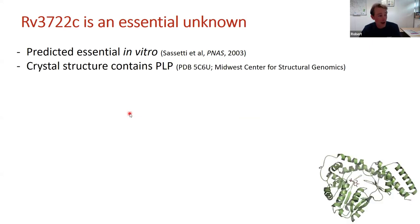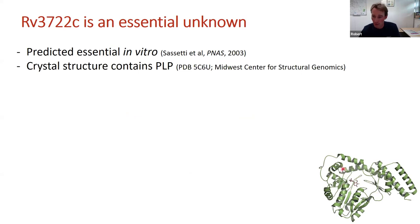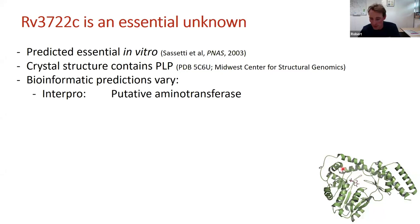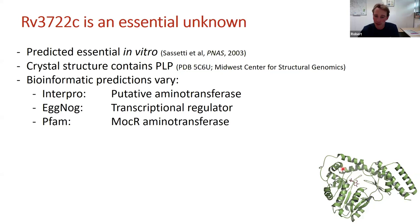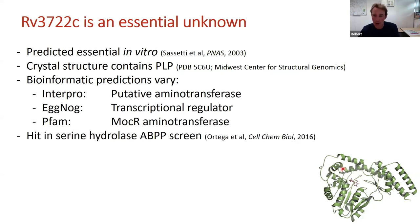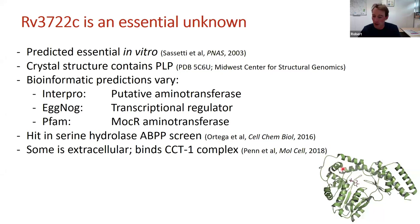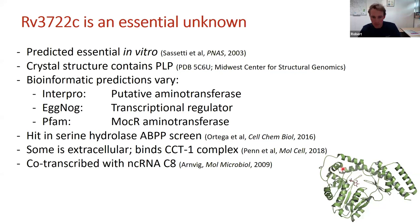One such essential gene is rv3722c. Genetic screens have predicted it's essential in vitro, making it a potential drug target. A crystal structure contains a pyridoxal phosphate moiety — the hallmark of an aminotransferase — but bioinformatic predictions vary: InterPro calls it a putative aminotransferase, ANOG calls it a transcriptional regulator, and BFM suggests it's a degenerate aminotransferase that can bind substrates but doesn't convert them. It was also a hit in activity-based protein profiling screens and found extracellularly bound to a protein-folding complex.